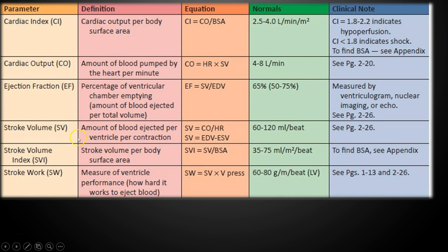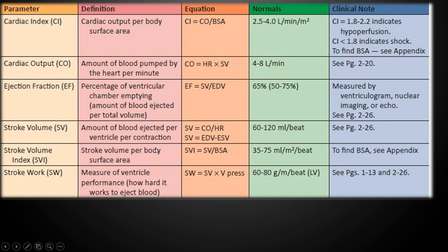Stroke volume is the amount of blood ejected per ventricular contraction — the amount of blood per beat. The normal value is 60 to 120 milliliters per beat. We'll also normalize stroke volume for body weight, looking at the stroke volume index, which is stroke volume per body surface area — the same way we normalize cardiac index.